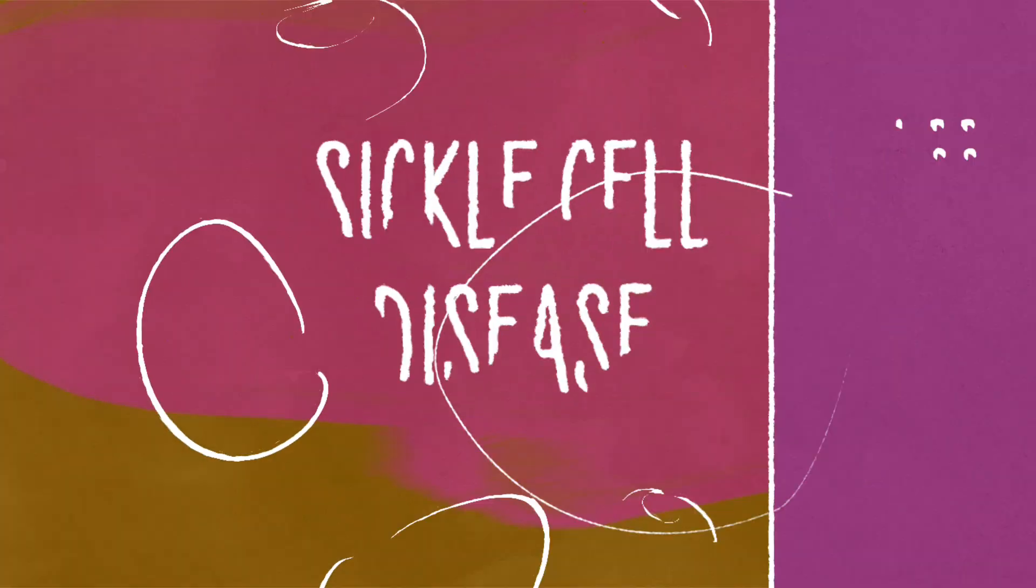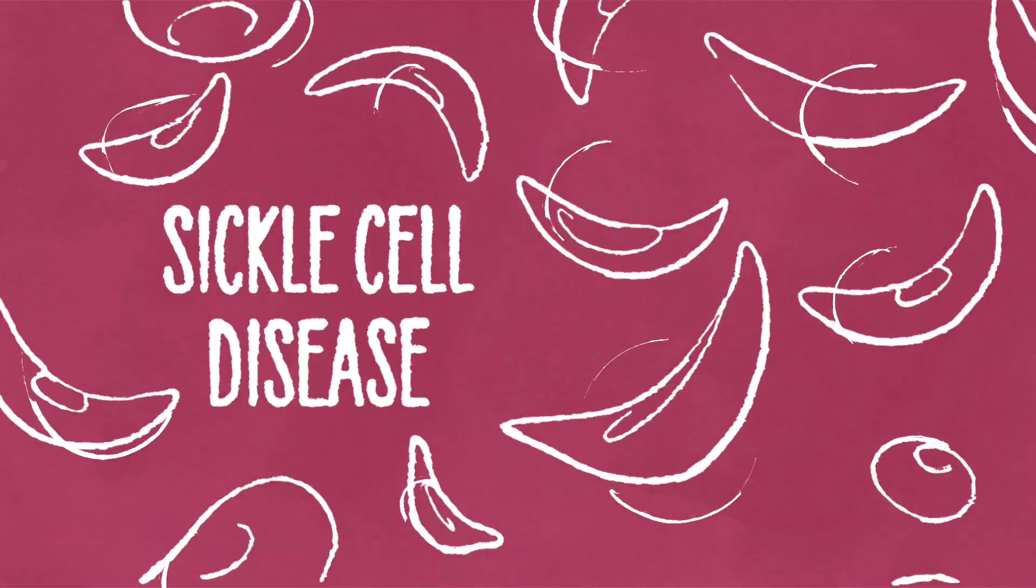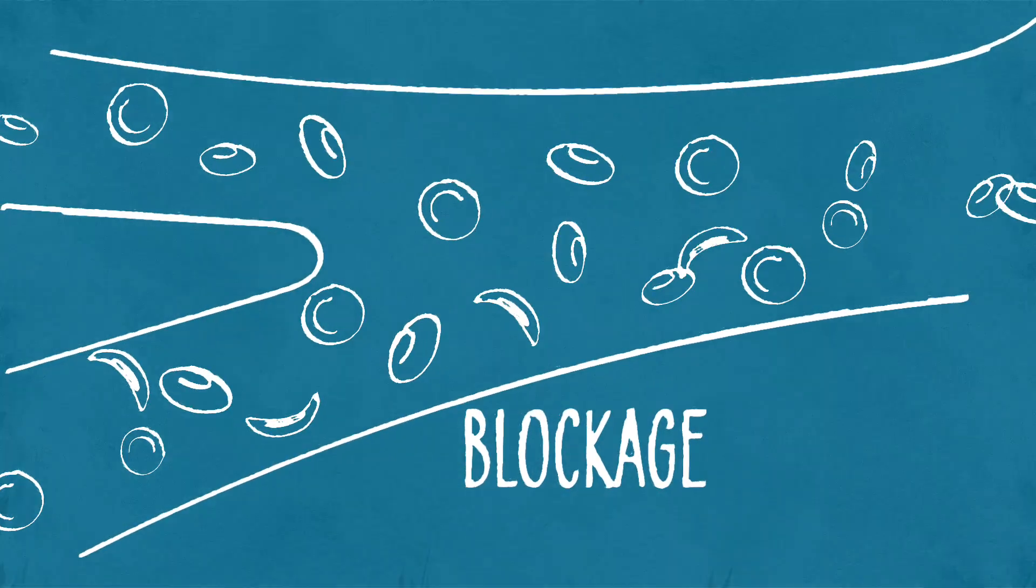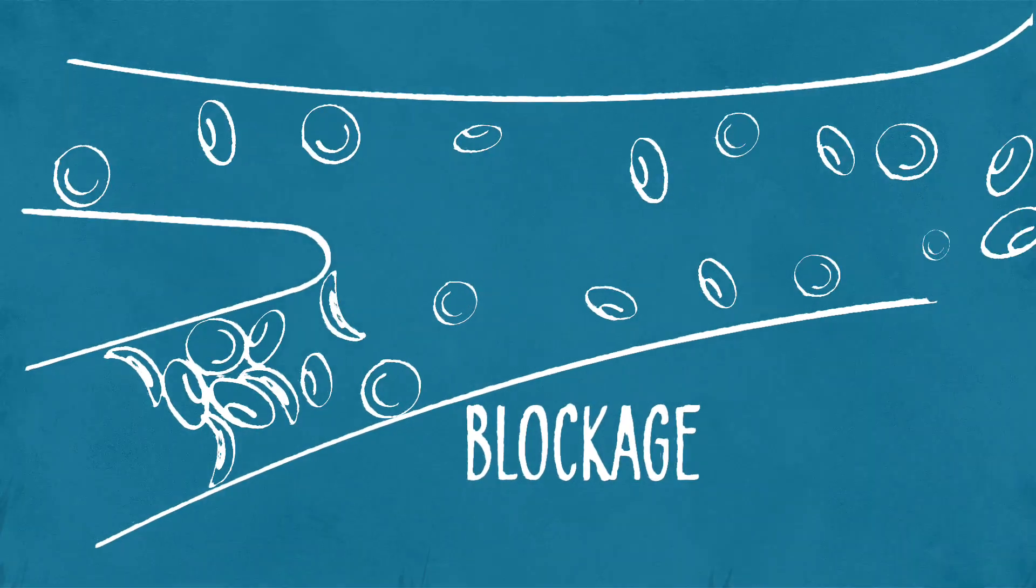In sickle cell disease, inherited changes in the globin gene cause red blood cells to be the wrong shape. These misshapen cells form clumps that reduce blood flow and oxygen to tissues throughout the body, causing pain and organ damage.